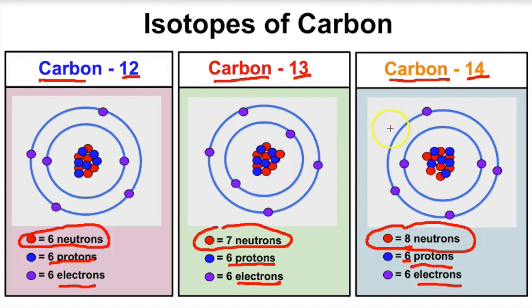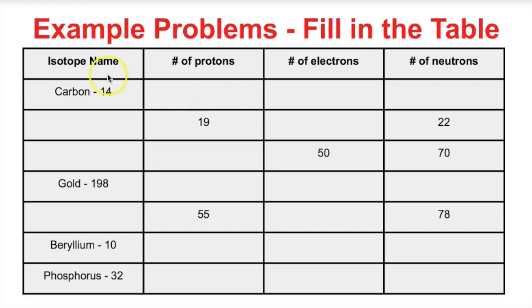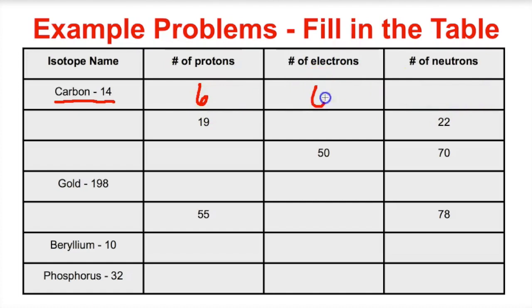Let's work a couple of example problems where we determine the number of protons, electrons, and neutrons in different isotopes. I recommend that you pause the video and try to work through these yourself. So right here we have carbon-14, which is one isotope of carbon. Because it's carbon, it's number six on the periodic table — atomic number 6 — so there are six protons, six electrons. To get the number of neutrons, we take the mass number minus the atomic number: 14 minus 6 gives us 8 neutrons.